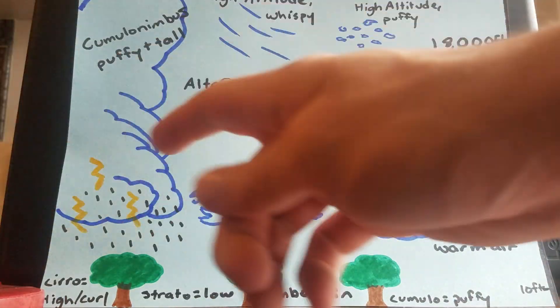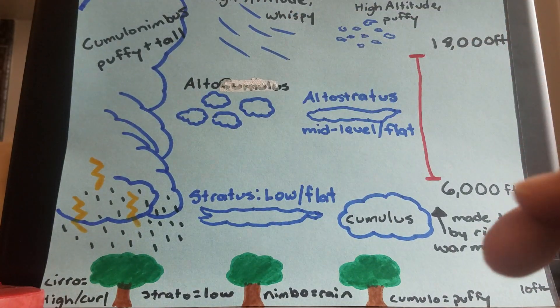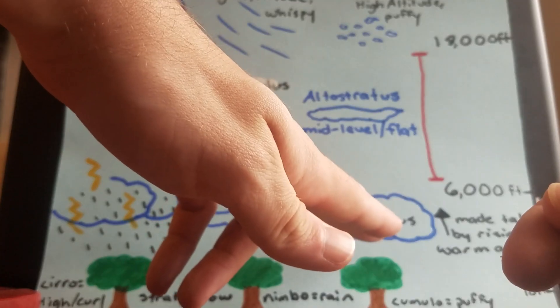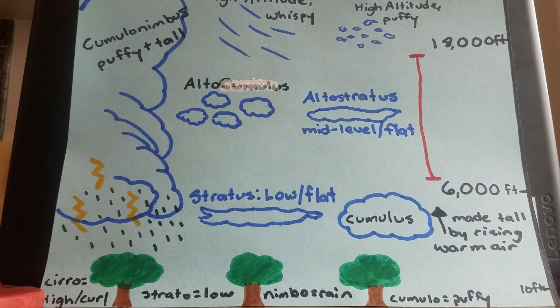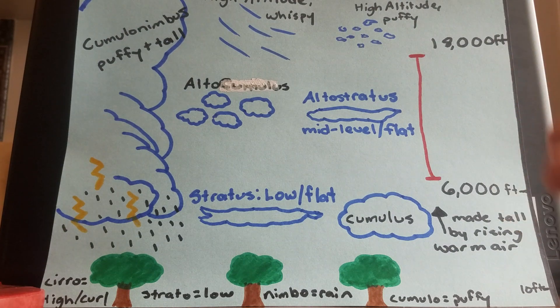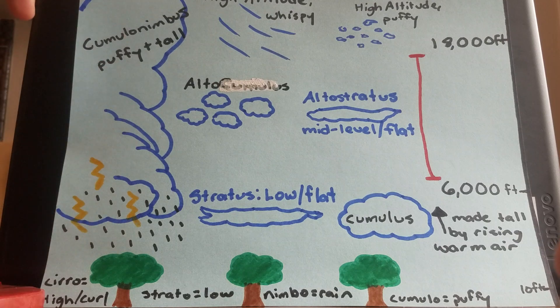Now the most commonly known storm cloud, thunderstorm cloud, is called a cumulonimbus cloud. This is a cumulus cloud, so it's very puffy, but it's a nimbus cloud, so it's highly rain bearing. This is your typical thunderstorm cloud. So you can see that it goes from the bottom of the troposphere nearly to the top.